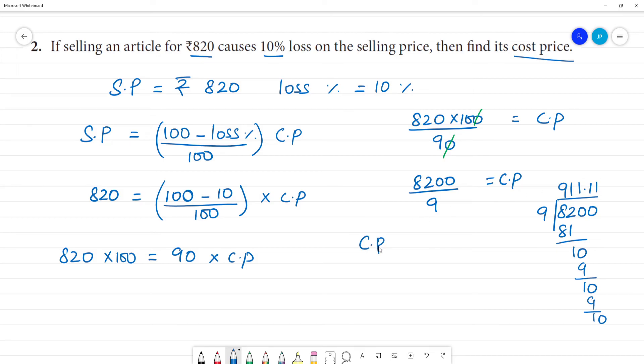so the cost price of an article is 911.11, rupees 911.11. So, cost price is 911 rupees. If cost price is 911 and selling price is 820 rupees, then there is 10% loss. Clear?